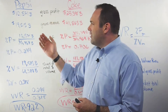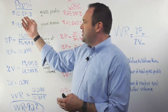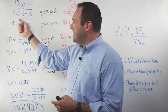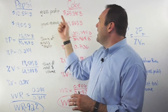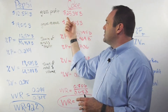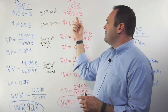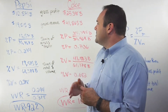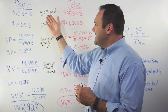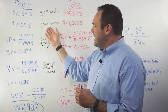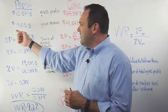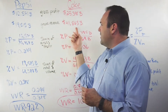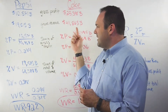You're going to take gross profit, which in 2016 for Pepsi was $10,571,000,000, and for Coke it was $25,398,000,000. So we're going to take those numbers and the gross revenue of $19,515,000,000 for Pepsi and $41,863,000,000 for Coke.